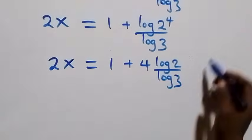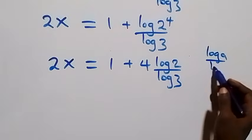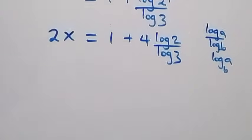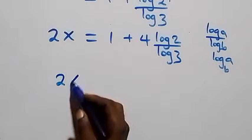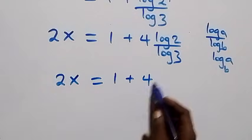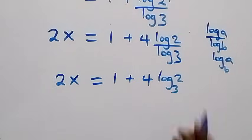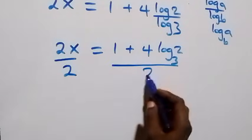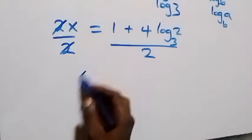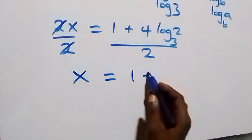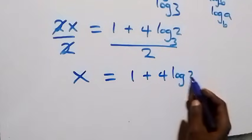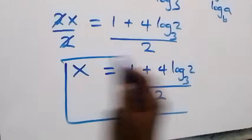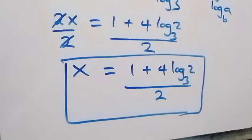Applying the change of base formula — log a over log b is the same as log a to base b — what we have becomes 2x equals 1 plus 4 log 2 to base 3. Dividing both sides by 2, we get x equals (1 plus 4 log₃2) over 2. So the value of x in this problem is (1 plus 4 log₃2) over 2.